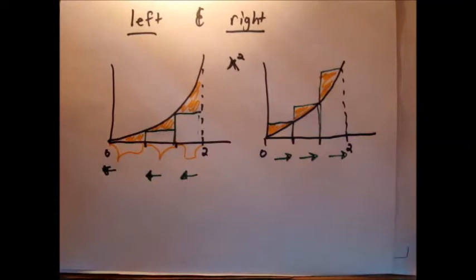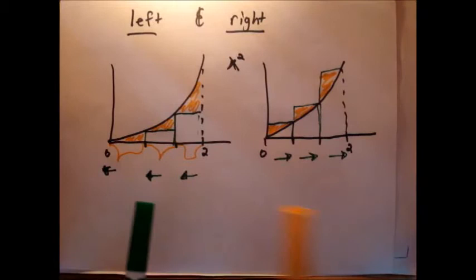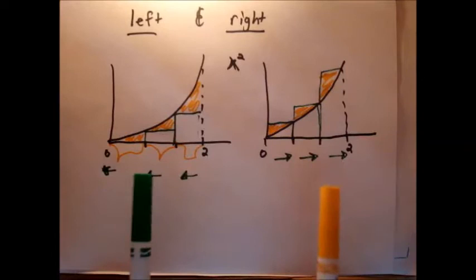On the left side, you get gaps that are not accounted for — they're missing. On the right side, you get overestimations that need to be removed to get the actual area. Please don't think that the left always underestimates and the right always overestimates — it depends on the nature of the function. In certain cases, either the left or the right might give you an overestimation or an underestimation.